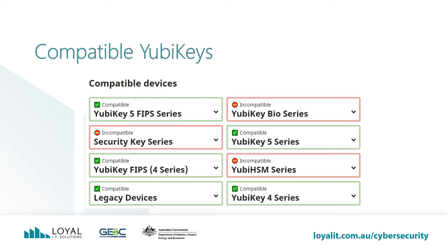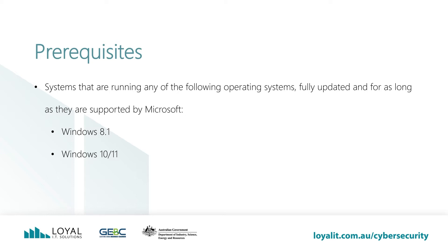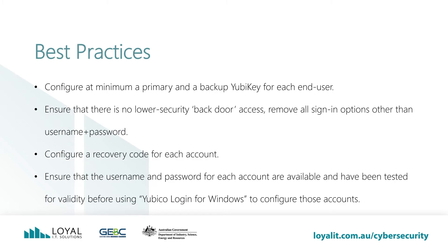For this to work, we need a YubiKey that supports the YubiKey Login for Windows software product. I will be using YubiKey Series 5 in this demonstration. The supported operating systems are Windows 8.1, Windows 10, and 11. YubiKey also says systems running any of these operating systems need to be fully updated and will be supported for as long as they are supported by Microsoft. The best practices for allowing YubiKey for a local account are as follows. Configure at minimum a primary and backup YubiKey for each user. YubiKey recommends having a backup key just in case the original is lost. Ensure that there are no lower security backdoor access. Remove all sign-in options other than username and password. This refers to other methods like Windows Hello, Face Recognition, or PIN.